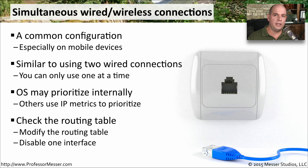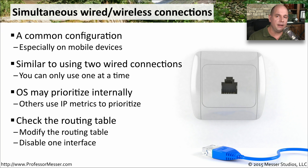The challenge is that the routing table may not be using the fastest connection — it's simply using the best route it happens to have in the table. So you may have to modify the routing table or delete or disable one of those interfaces to force all of the traffic through the other.